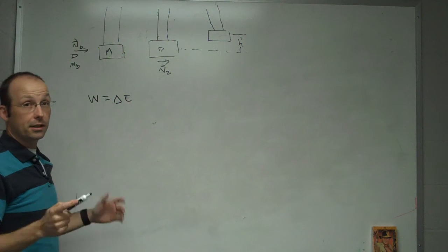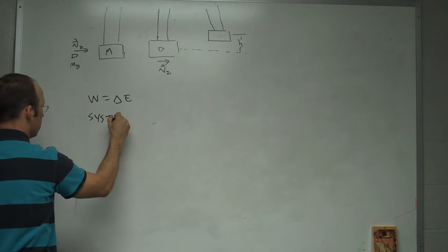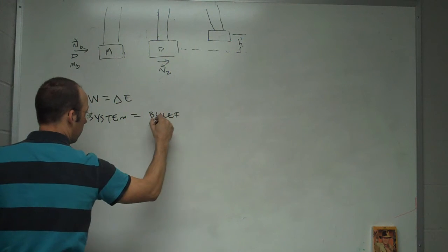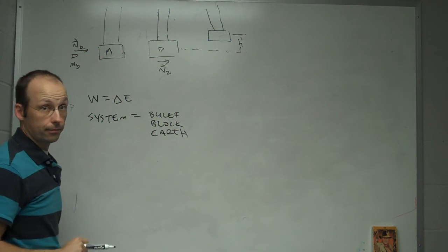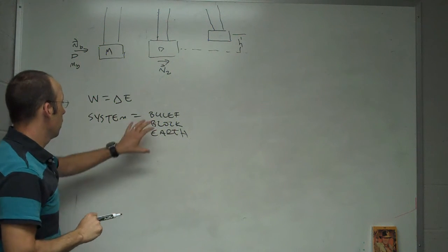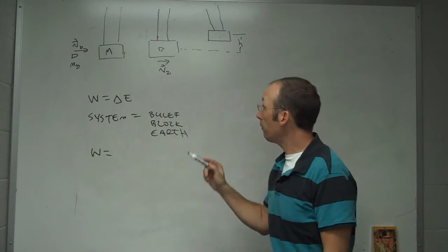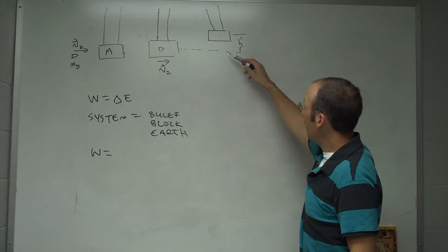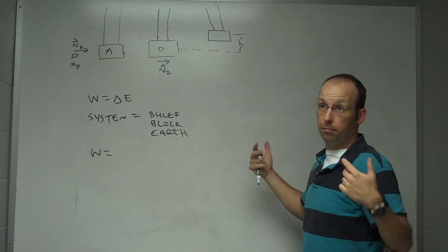What's my system? I'm going to say my system is the bullet, block, earth, all those together. I'm not going to worry about the strings. So this means the next thing is what's the work? Well, do I do gravity? Gravity is acting on that. Do I have to worry about that? No. You don't because that's an internal force to my system. It's an interaction between these and the earth. And so it doesn't do any work on the system. It's part of the system.